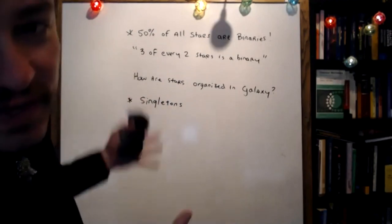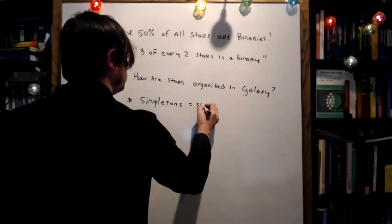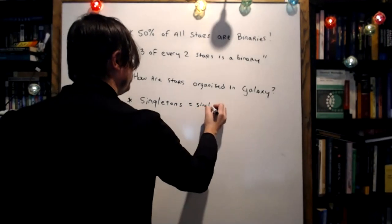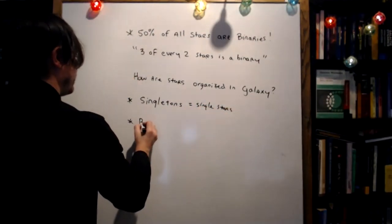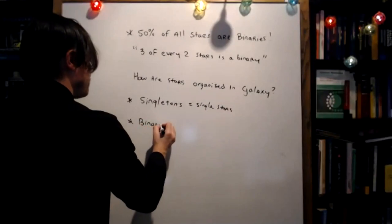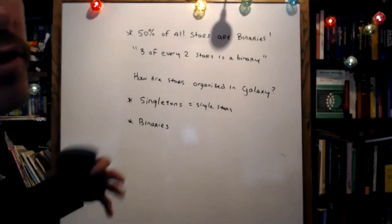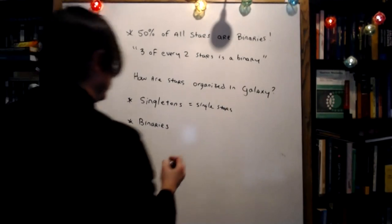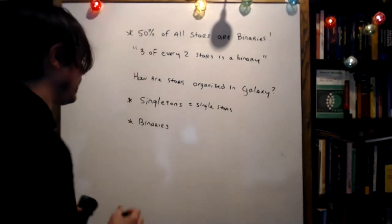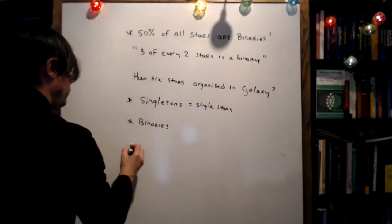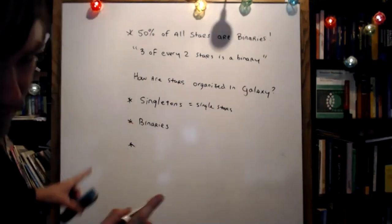There are single stars — sometimes called field stars — just random single stars. We also find binaries: a binary is when you have two stars that are gravitationally bound to each other in some kind of an orbit. We also find stars in clusters.